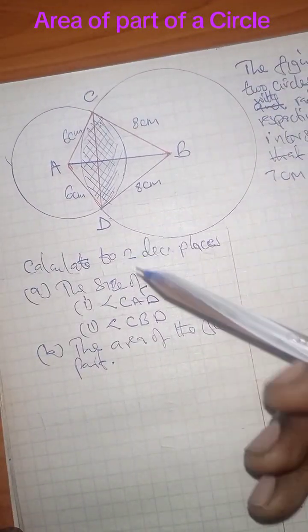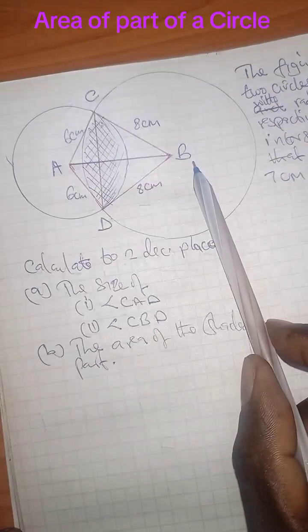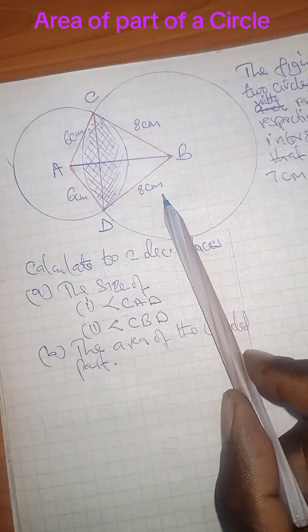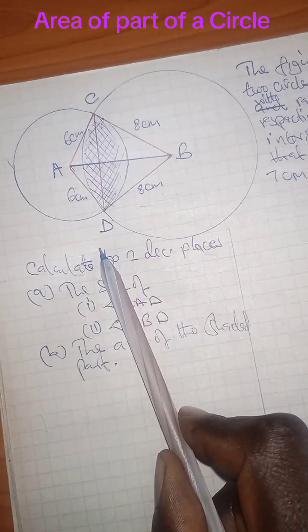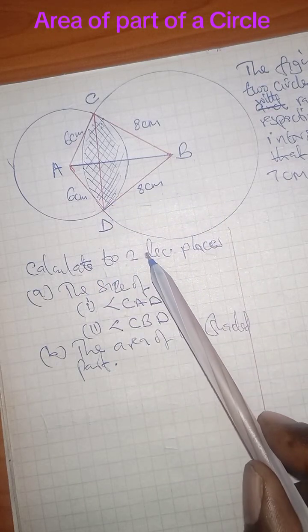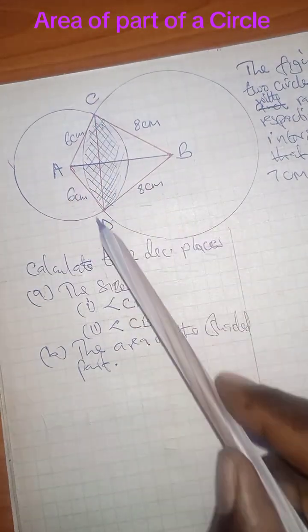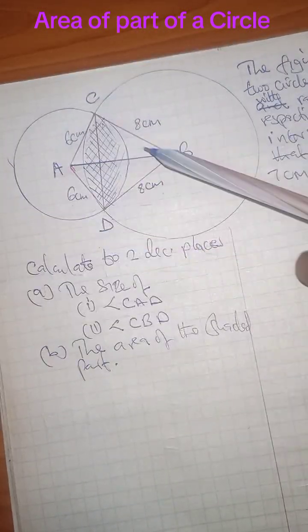The figure below shows two circles with centers A and B with radii of 6 cm and 8 cm respectively. The circles intersect at CD so that the chord CD is 7 cm long. Calculate to two decimal places the size of angle CAD, angle CBD, and then the area of the shaded part.